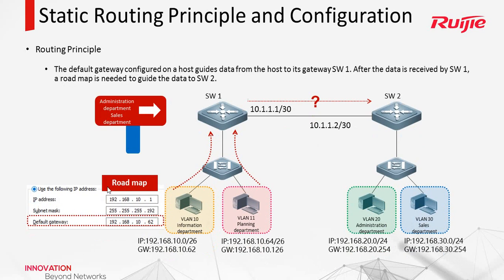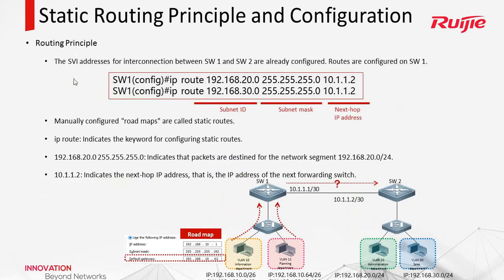So here, after the data is received by SW1, a route map is also needed to forward to SW2. So here, we need to configure a static route using this format: IP route, the destination IP address, mask, and next hop. So for SW1, the next hop is SW2.